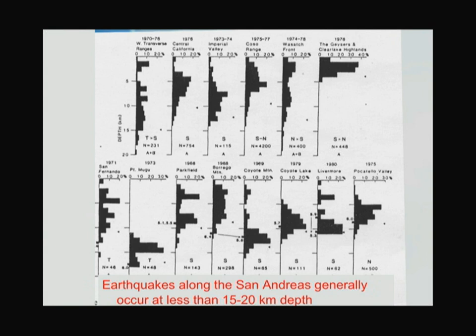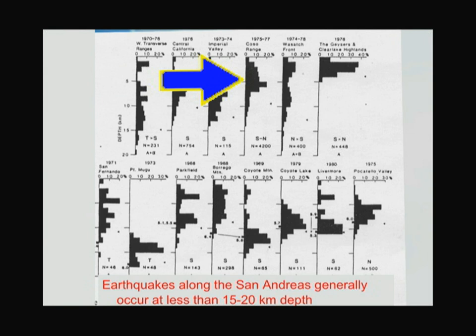This is a distribution of earthquakes in different parts of the San Andreas with depth — depth going to five, ten, fifteen, twenty kilometers — showing where the different sections have their earthquakes. The bigger the bar, the more earthquakes tend to occur at those depths. The patterns overall are quite complicated in detail but they tend to start below a few kilometers and go down towards fifteen kilometers with some complicated patterns in between. The more we study them, the more complicated everything gets.